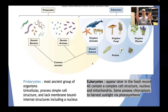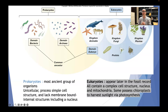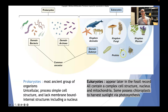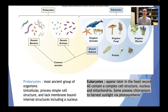Within eukaryotes we have three main kingdoms. Kingdom Animalia — that's us. Kingdom Fungi — fungus is really fascinating, mushrooms are great to add to food. And then of course Kingdom Plantae. We also have Protists, which would include things like plankton. Even though plankton are microscopic, they still have a very interesting and complex cellular structure, and I can't wait to talk about plankton — it's one of my favorite parts of this unit.